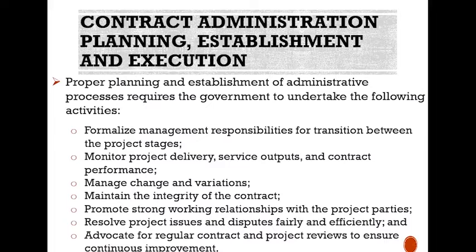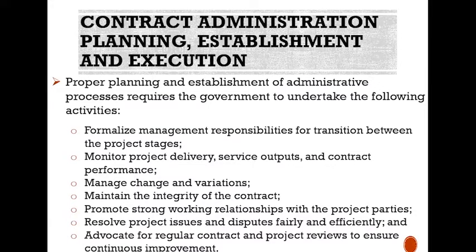Contract administration: planning, establishment, and execution. Proper planning and establishment of administrative processes requires the government to undertake the following activities: formalize management responsibilities for transition between project stages, monitor project delivery, service outputs, and contract performance, manage change and variations, maintain the integrity of the contract, promote strong working relationships with the project parties, resolve project issues and disputes fairly and efficiently, and advocate for regular contract and project reviews to ensure continuous improvement.